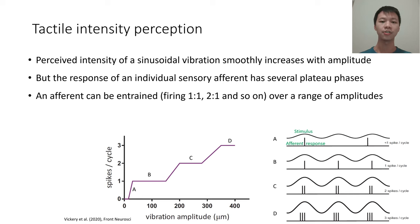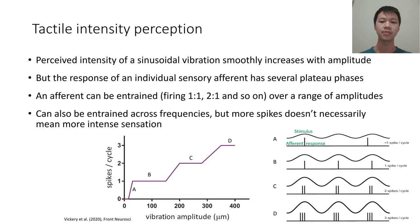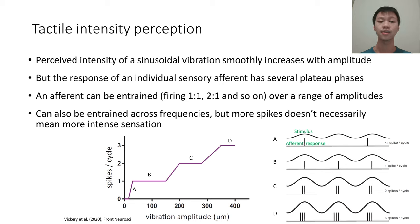Afferents can also be entrained across frequencies, where increasing the spatial frequency — for example with smoother textures — would proportionally increase your discharge rate, but that doesn't necessarily lead to a more intense sensation.